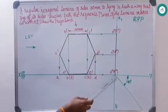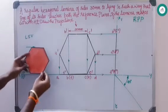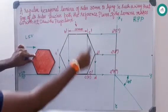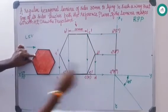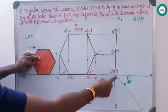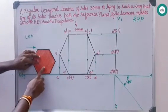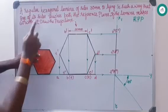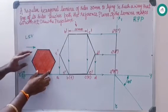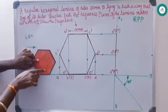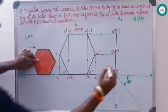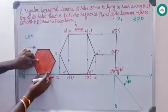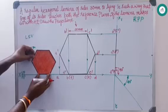From the side view it looks like a line — what we have done is placed the hexagonal lamina this way, and it looks like this from the front view. From the top view it is just a line, and from the left side view it is just a line. Now, this lamina makes 60 degrees with HP. Currently from the side view the lamina is making an angle of 90 degrees — we want 60 degrees.